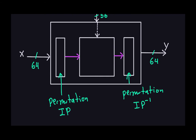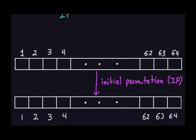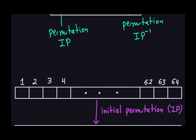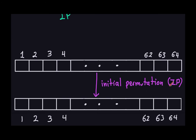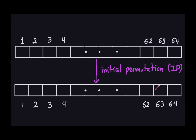Let's see what the initial permutation is actually doing. Imagine you have this 64-bit block of plain text, positions 1 through 64, each containing a 0 or a 1. The initial permutation takes these bits organized from position 1 through 64 and rearranges them in a different order. It's independent of the key.